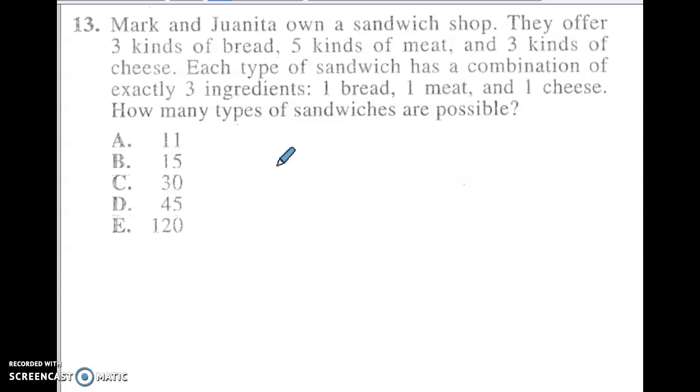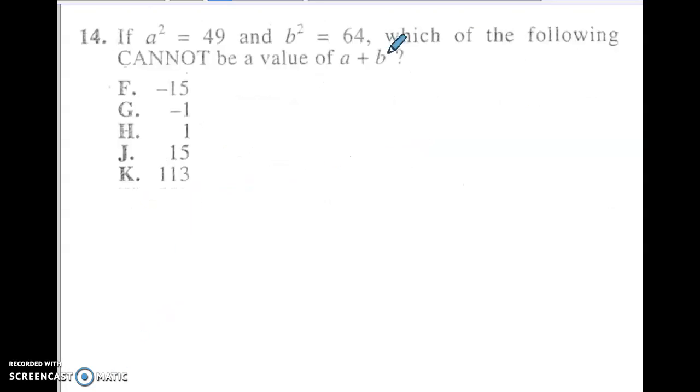Okay, again, read this one. Give it a shot. So this is actually the Chapter 11 probability stuff. And we have three different categories, bread, meat, cheese. And you're picking one from each. One, one, one. So this is just that counting principle where I take three kinds of bread times the five kinds of meat times the three kinds of cheese to get how many are possible. So it ends up being just 45 different sandwiches are possible.